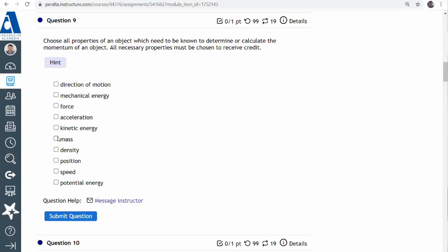So to know the momentum, you need to know mass. And velocity comes in two parts. It comes in speed, the magnitude of velocity, and direction of motion.